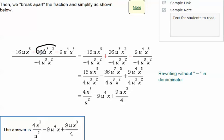Then we have this term, 36u to the seventh x to the third, copied here. Same denominator copied here, because we have to divide all of these. Subtraction sign copied here. 9u to the fourth x to the fifth copied here. And again, the same denominator copied here.